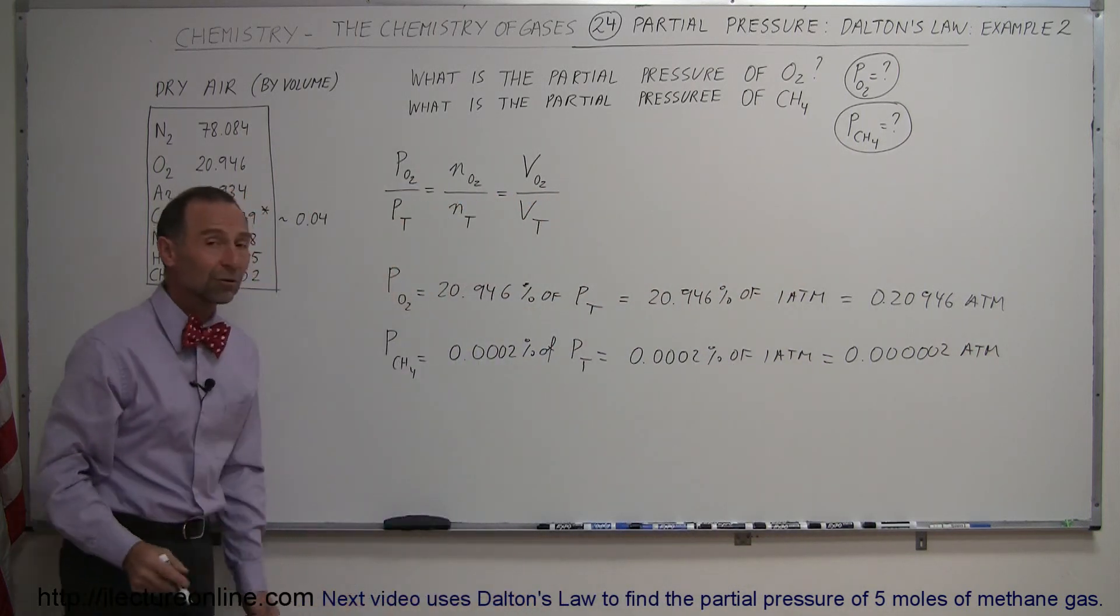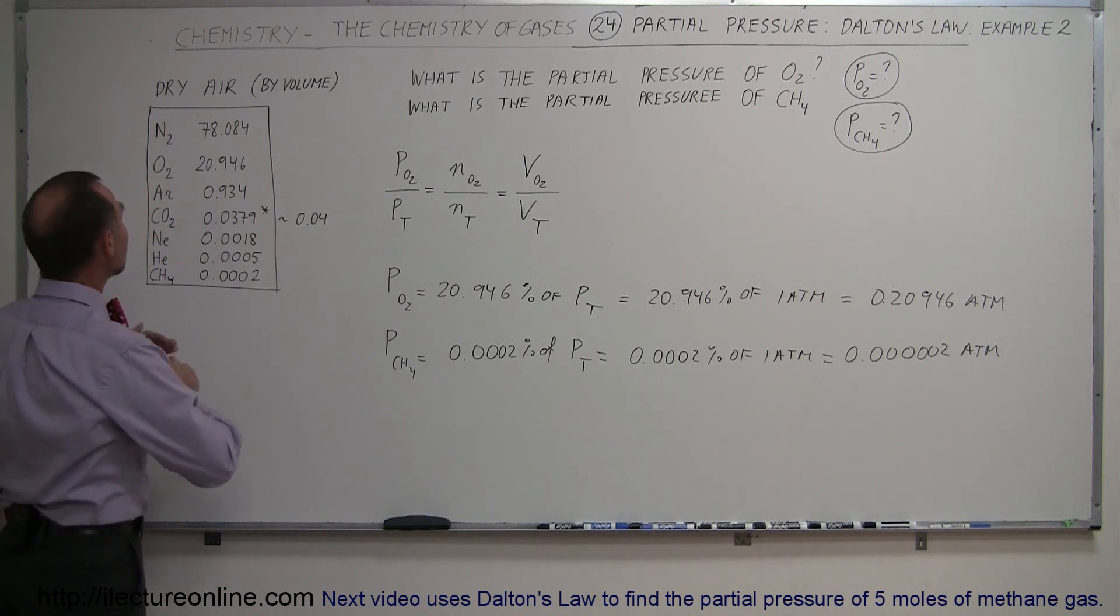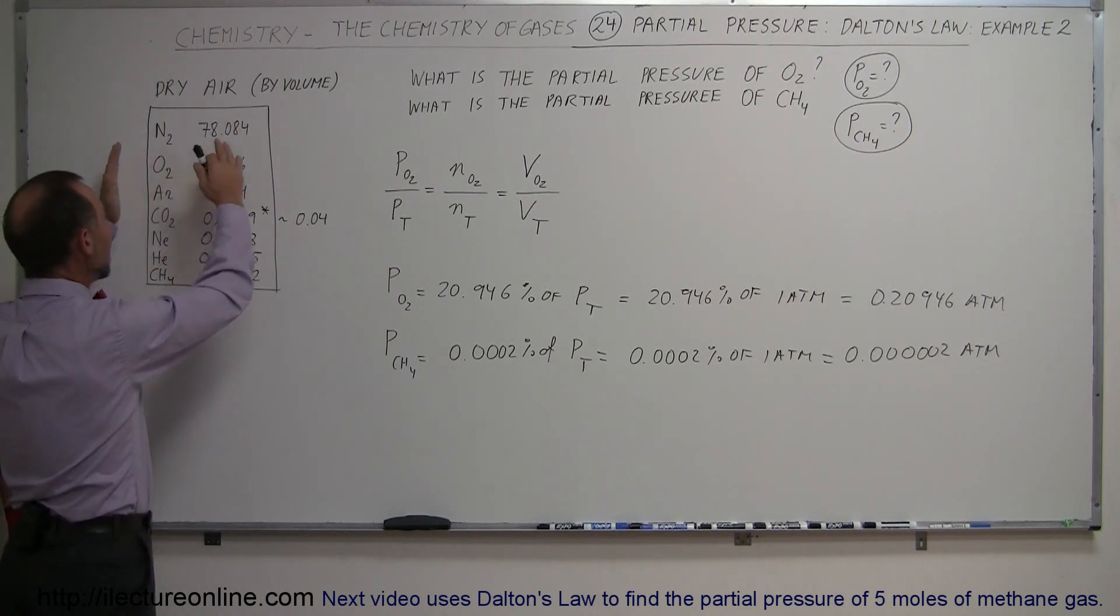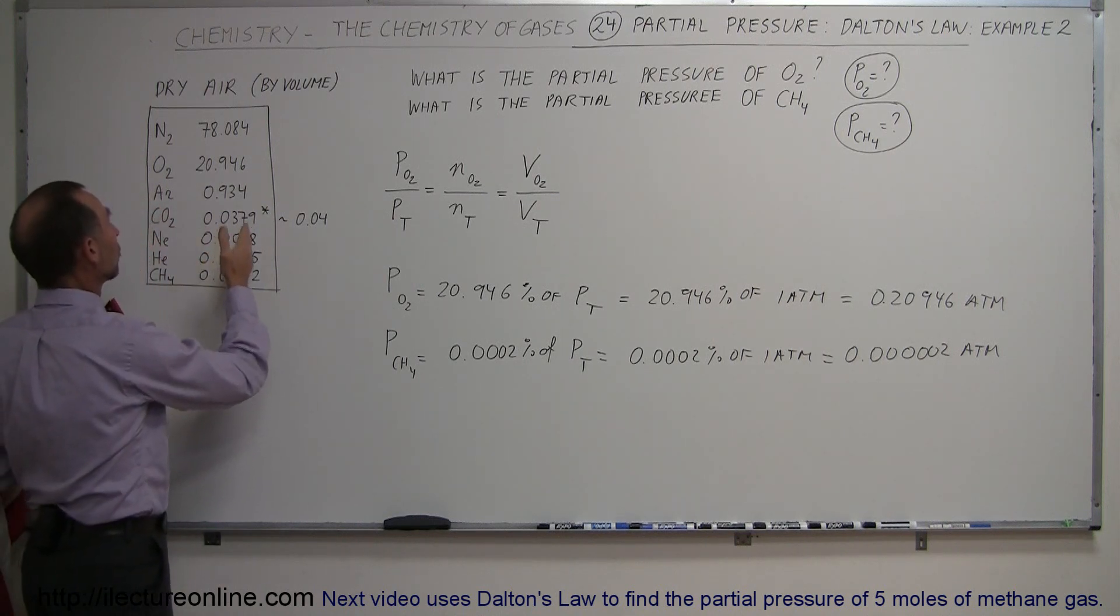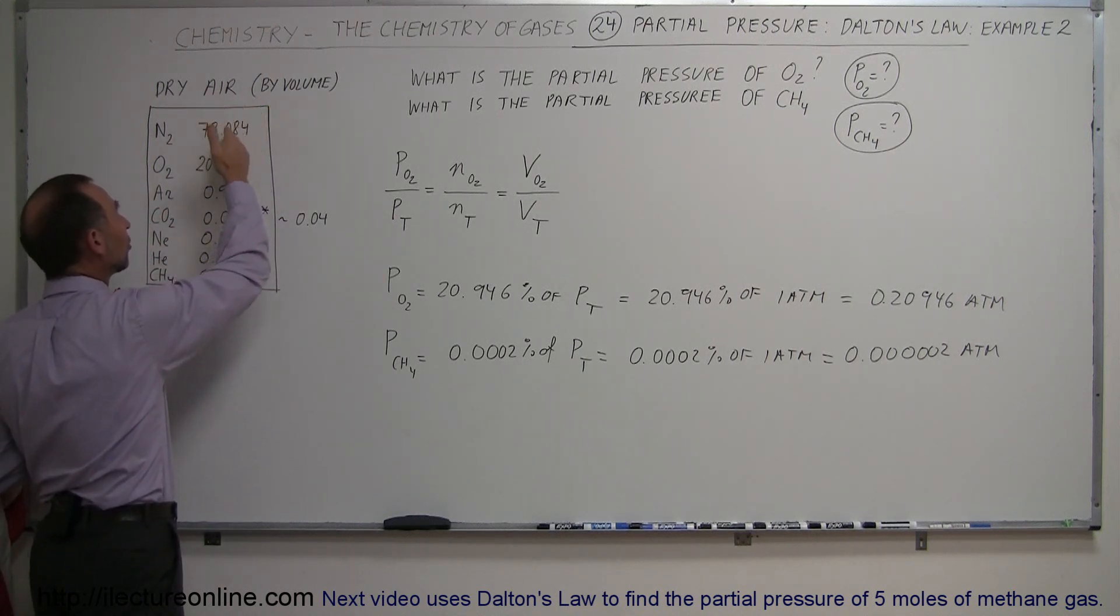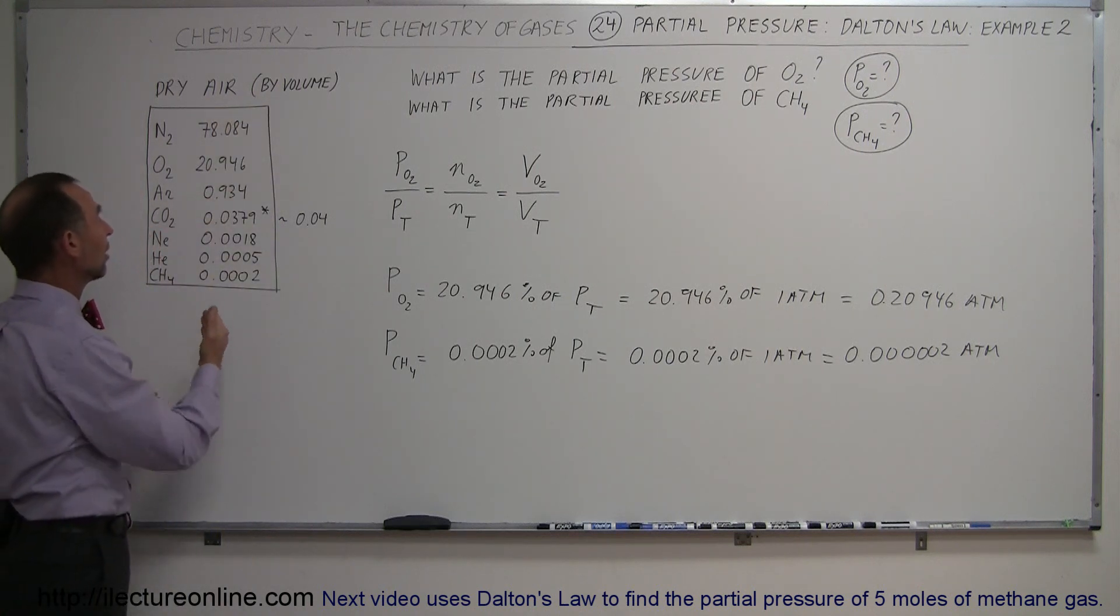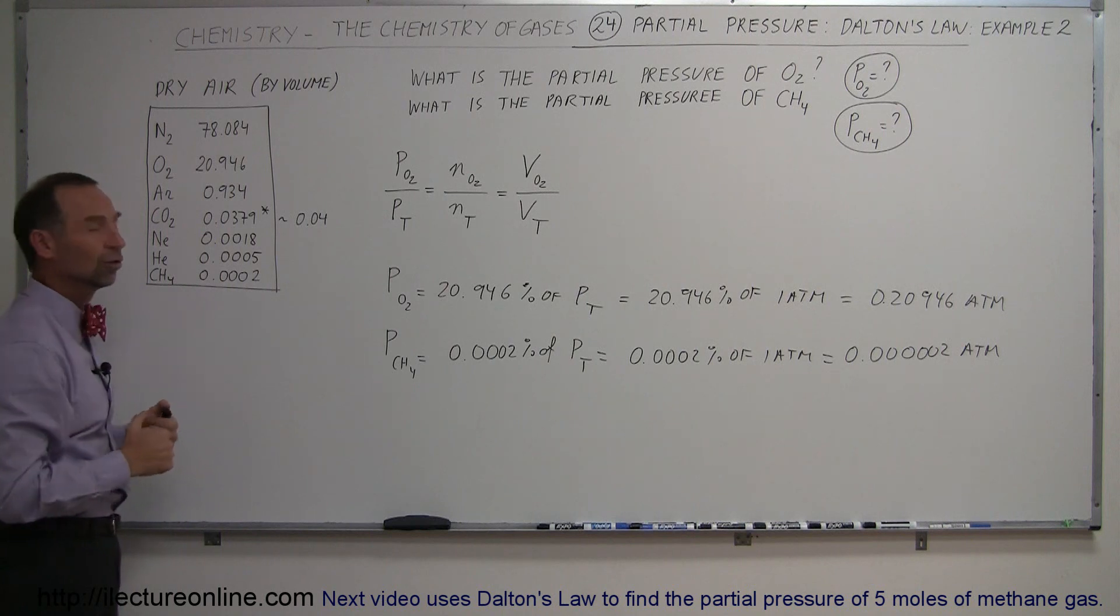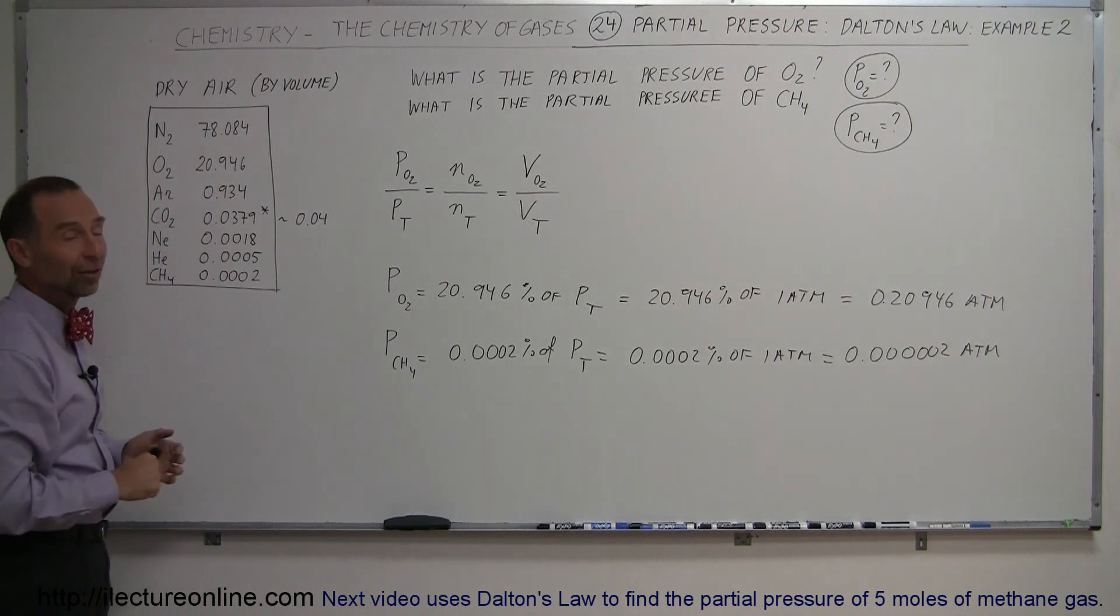So that's how you do that. Very straightforward. Anytime you come up on a table where they give you the amount of each gas in a mixture of gases, and the amount of each gas is expressed in terms of volume, or percentage of the total volume, then you can simply take that number and say that also represents the percentage of the total pressure. Therefore, it represents the partial pressure of each constituent in that gas.